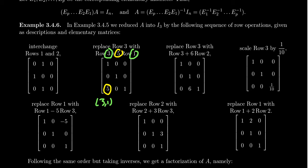The next operation was replacing row 3 with row 3 plus 6 times row 2, so we place a 6 in the 3, 2 position of the identity matrix to get that elementary matrix. Then we scaled row 3 by 1 tenth, which gives a diagonal matrix with 1s along the diagonal except in the 3, 3 position where we put 1 tenth. Scalings and interchanges are fairly straightforward; replacements take a bit of getting used to.